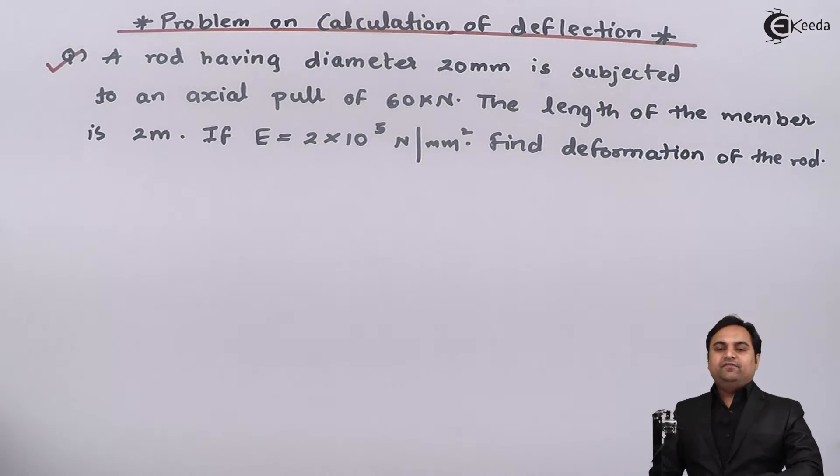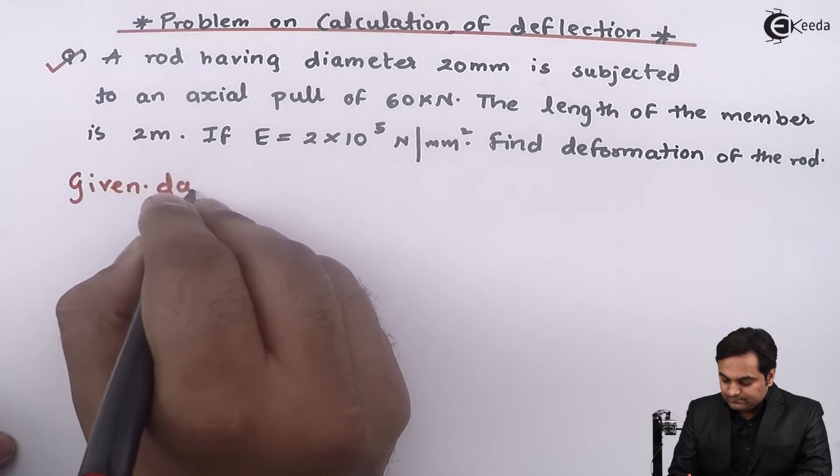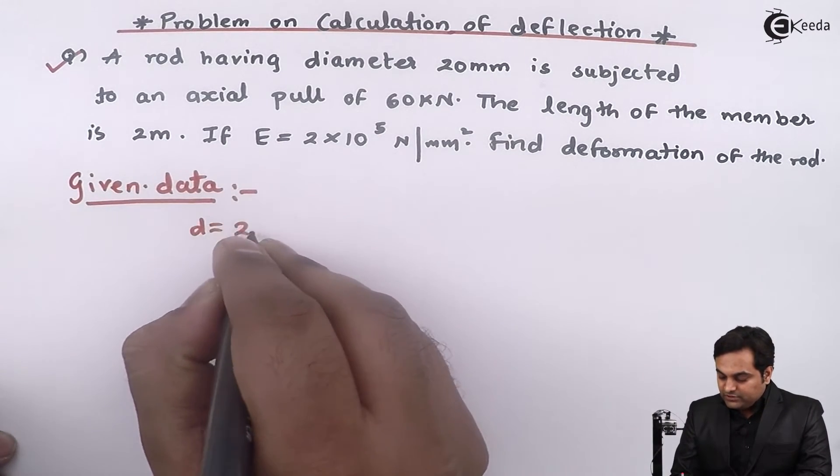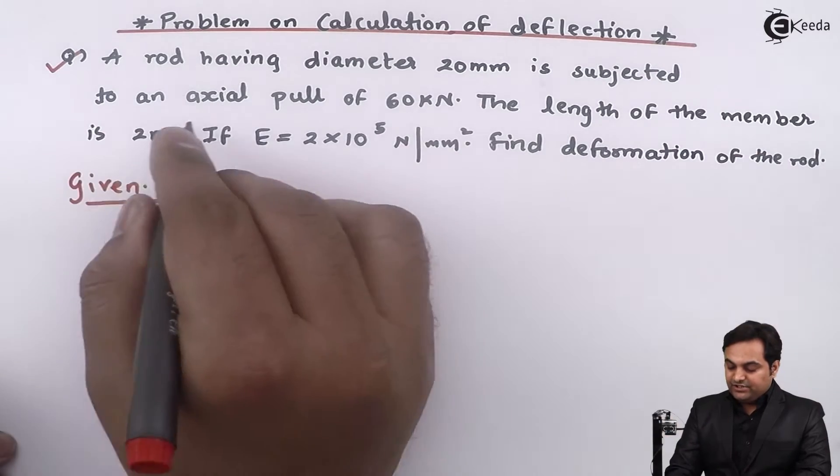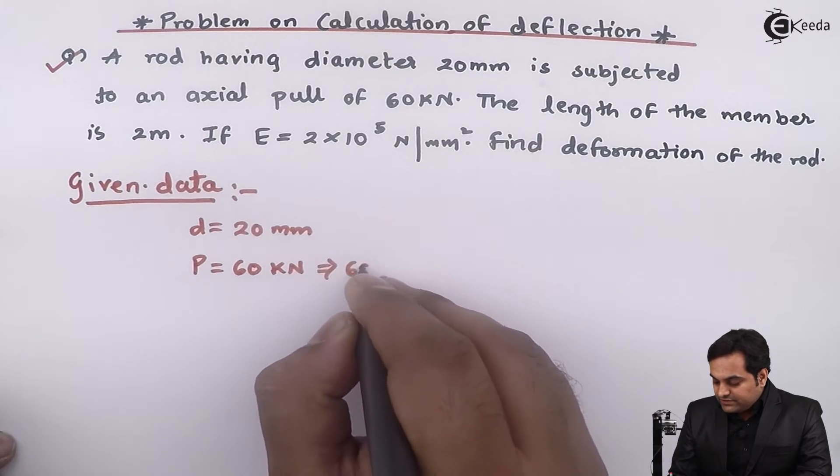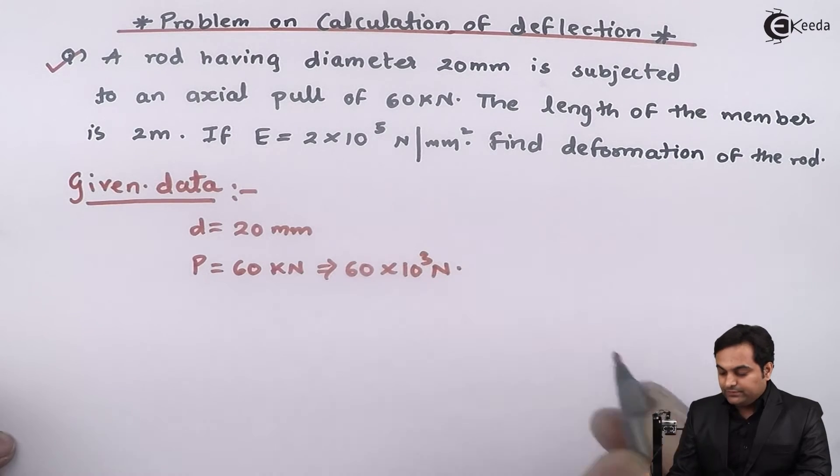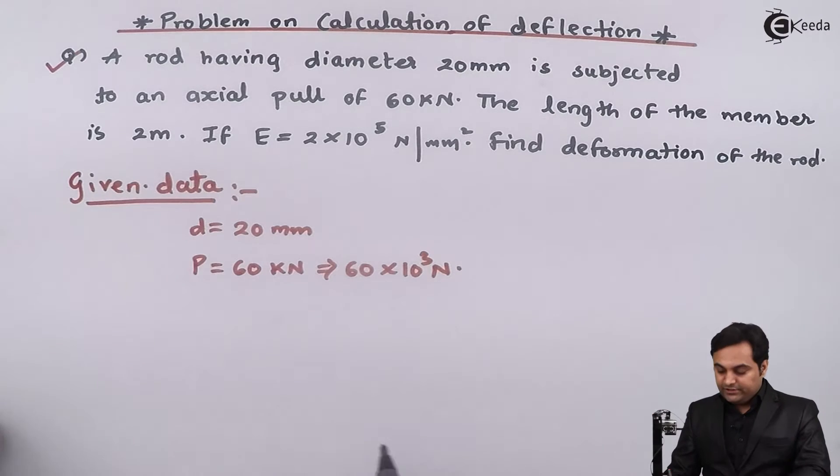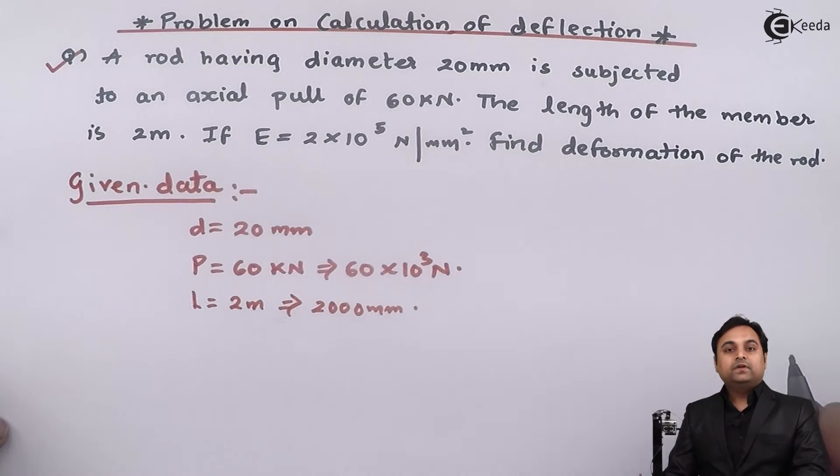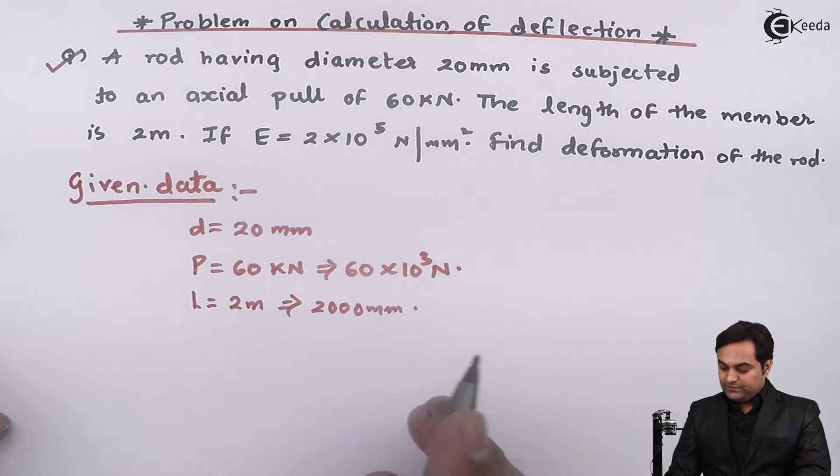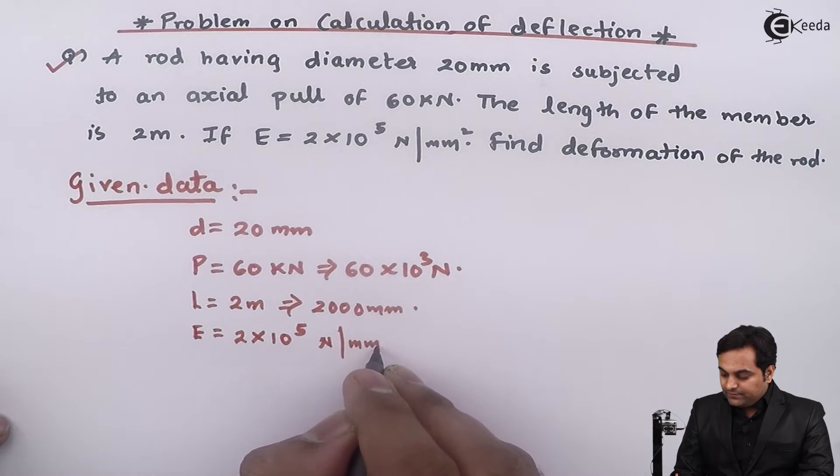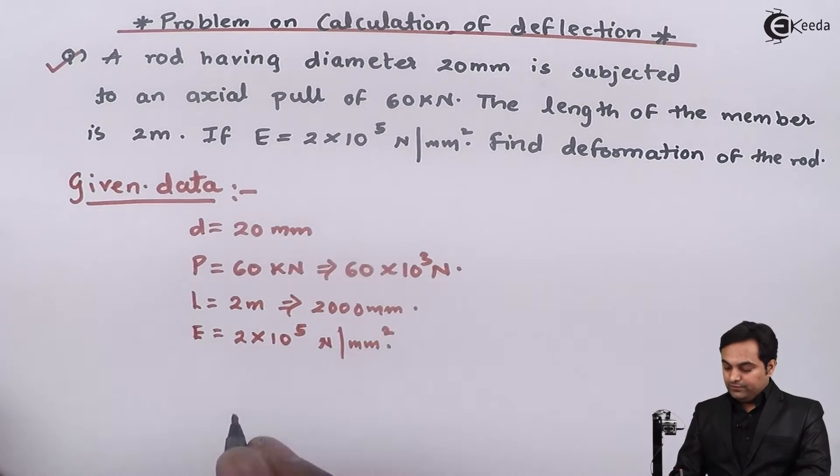Now this is the question we have. I'll write the data: a rod having diameter 20 mm, d is 20 mm, is subjected to an axial pull of 60 kilonewton, so it is 60 into 10 raised to 3 Newton. Next, the length of the member is 2 meters, so it is 2000 mm. If capital E Young's modulus, it is 2 into 10 raised to 5 Newton per mm square.